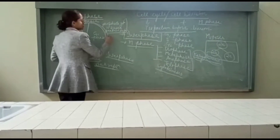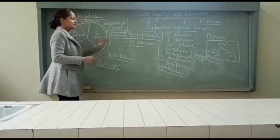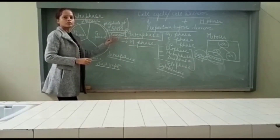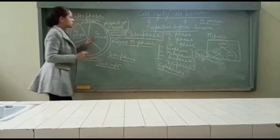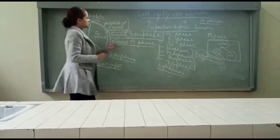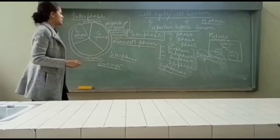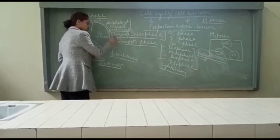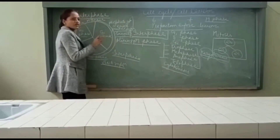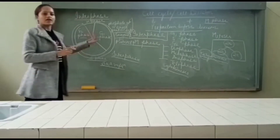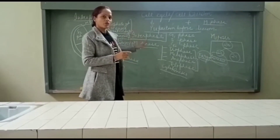For DNA replication we also need enzymes, and these enzymes are made up of proteins. So in G1 phase, synthesis of proteins takes place — protein synthesis will increase. Similarly, proteins come from RNA, so we also need synthesis of RNA. All types of RNA are needed as transcription will occur and RNA will be formed.